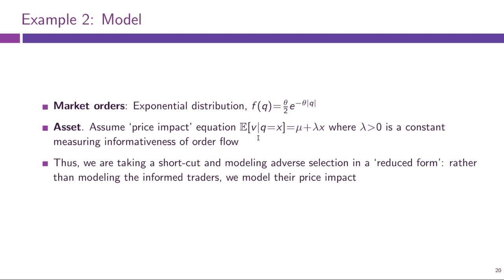This assumption embodies both the distribution of V and the distribution of Q conditional on V — it characterizes the ex ante uncertainty about the fundamental value and imposes assumptions on how market traders react to their private information. This is a significant shortcut, but we are more interested in how the limit order book is formed given market traders' behavior, so we take their behavior as fixed and do this reduced form analysis.